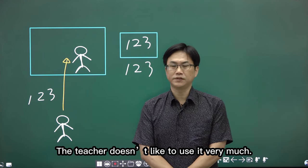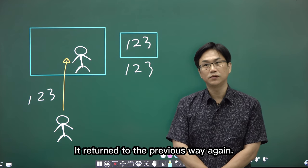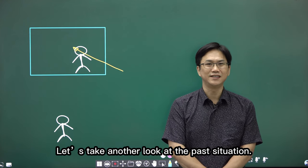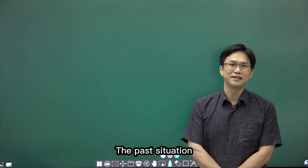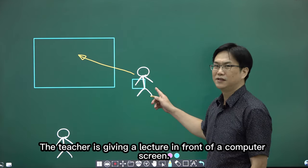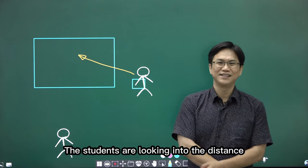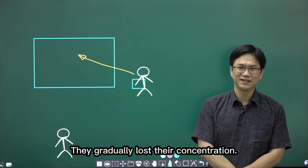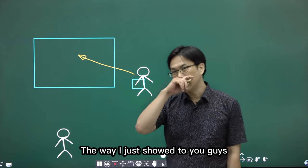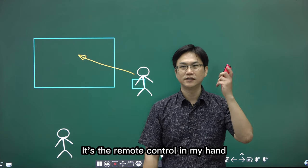Therefore, the teacher doesn't like to use it very much. What is the result? It returned to the previous way again. The past situation, that's it. The teacher is giving a lecture in front of a computer screen. The students are looking into the distance. They gradually lost their concentration. Well, the way I just showed to you guys, how did I do it? It's the remote control in my hand.